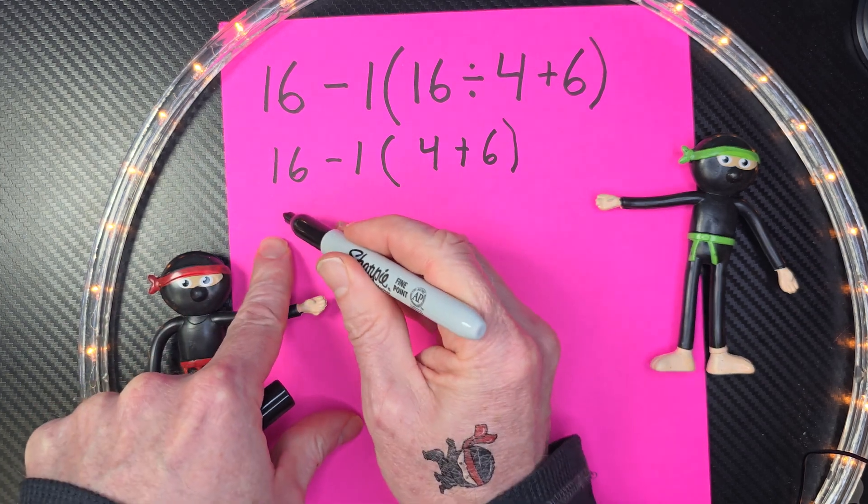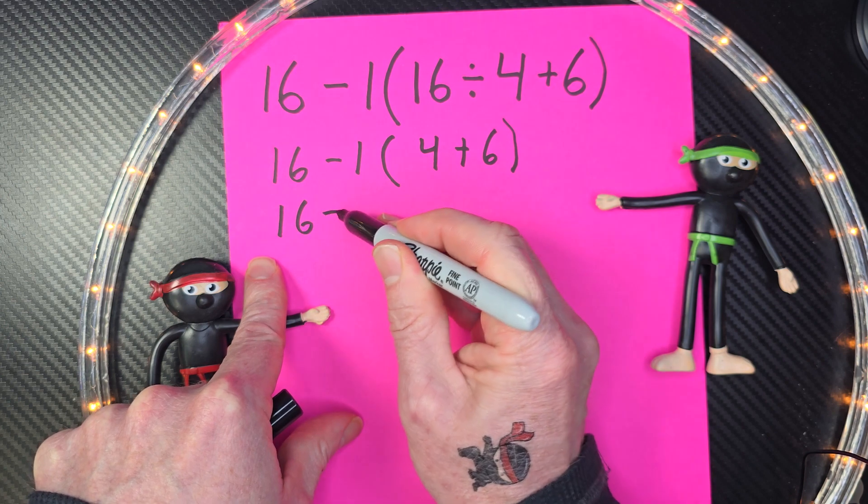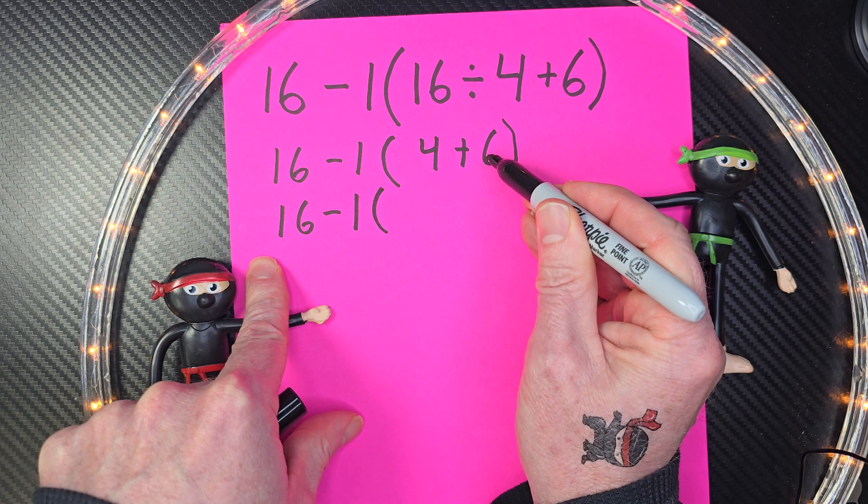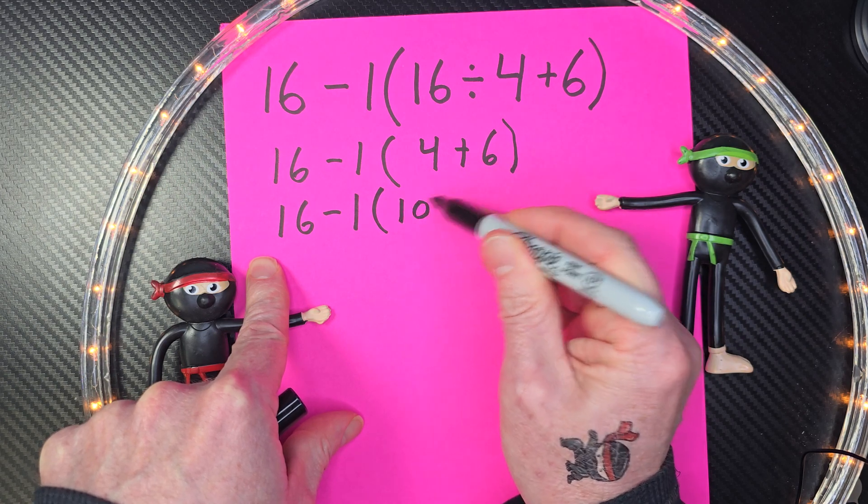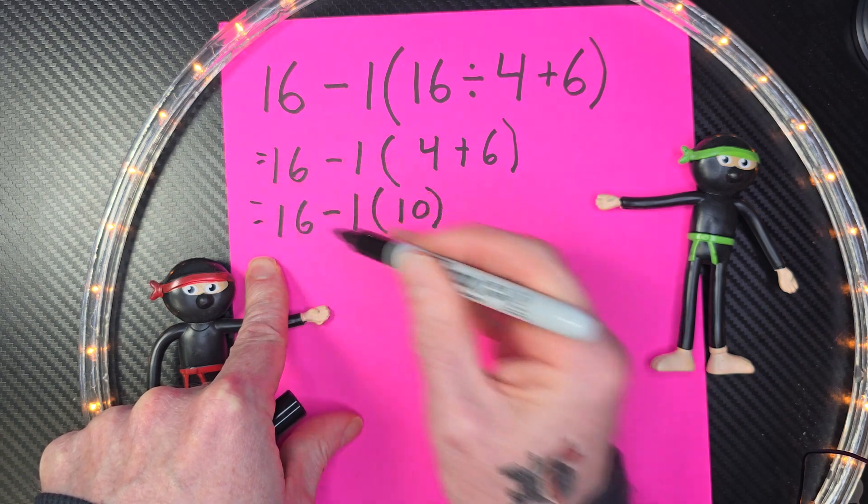All right, keep on going. So now I'm going to go ahead and put 16 minus 1, and then 4 plus 6 equals 10. Just like that. Keep going, keep going. We're doing good.